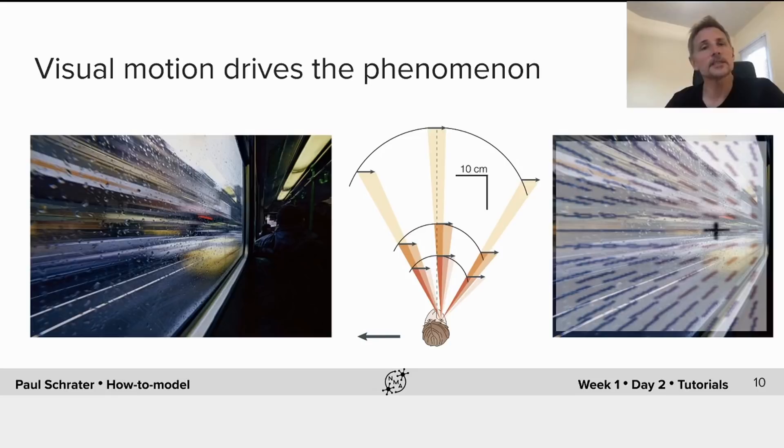Notice that this phenomena has boundaries. It doesn't occur if your eyes are closed. Visual motion is driving the phenomena. That signal that's driving the phenomena is shown in this figure on the left as a blur diagram, illustrating the motion of the scene next to you.